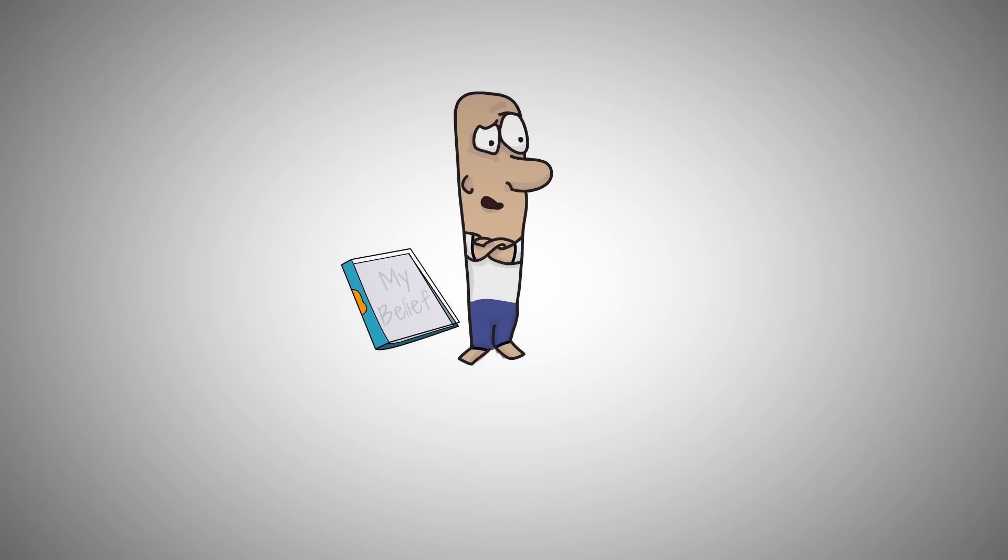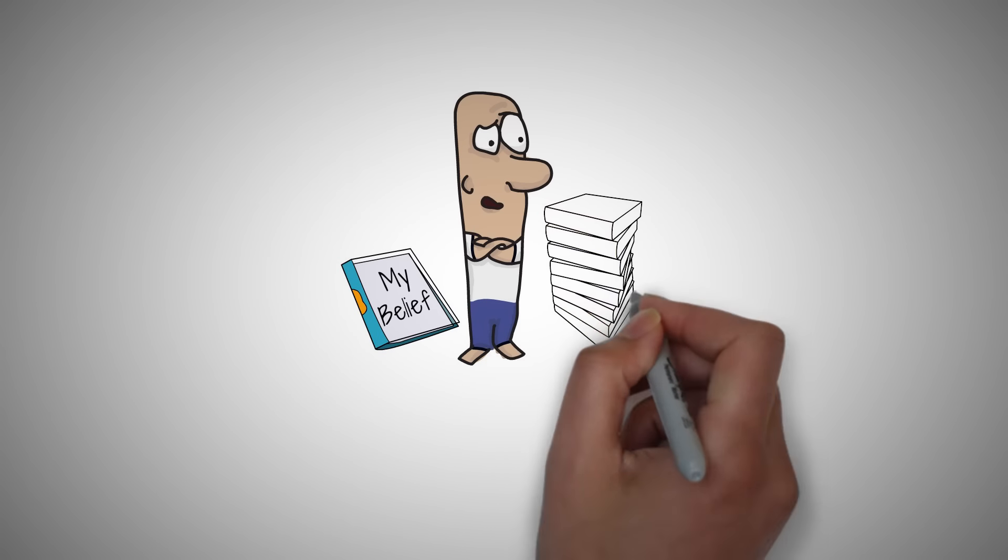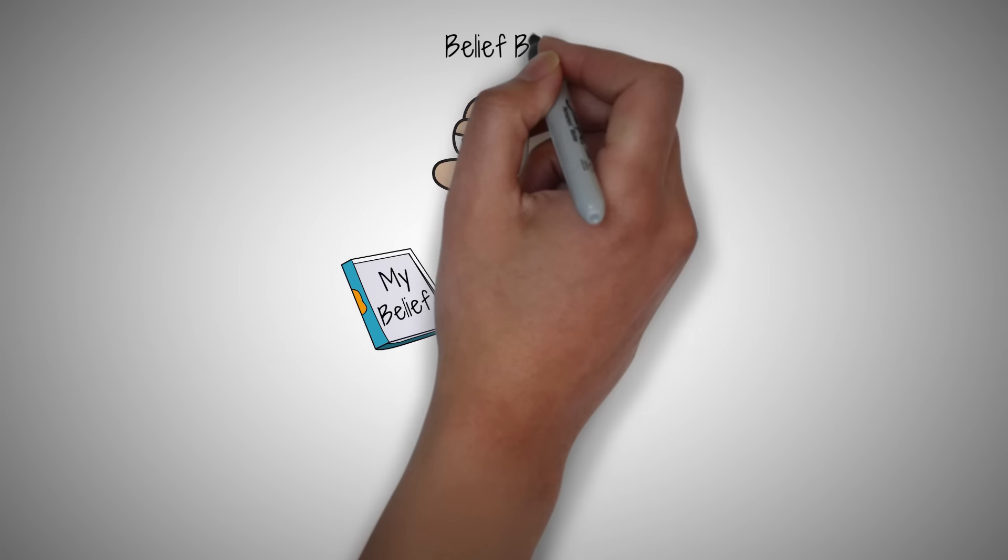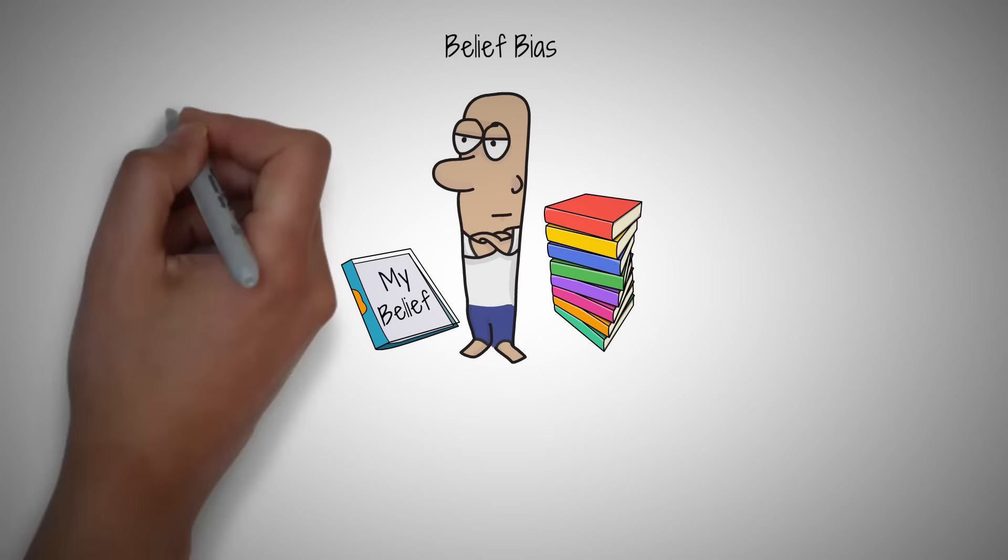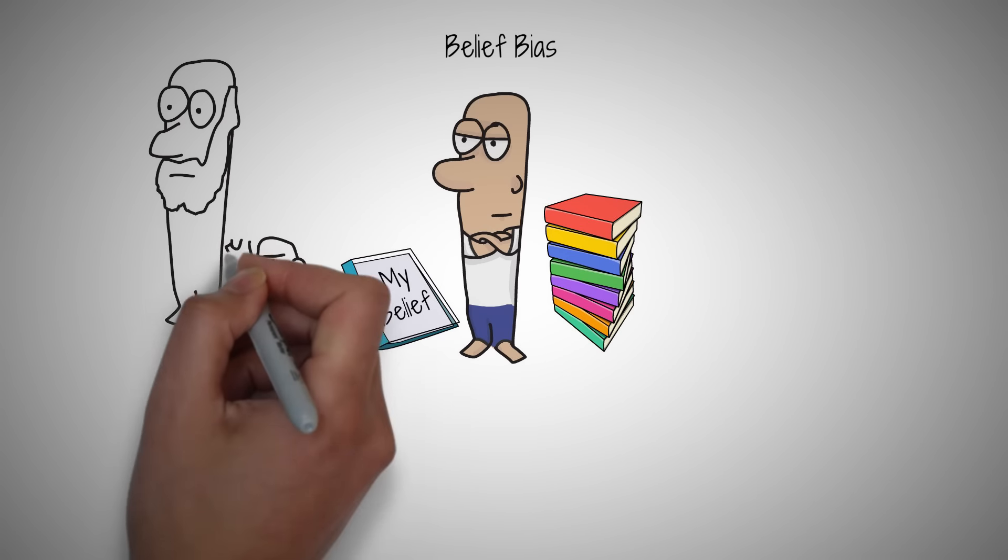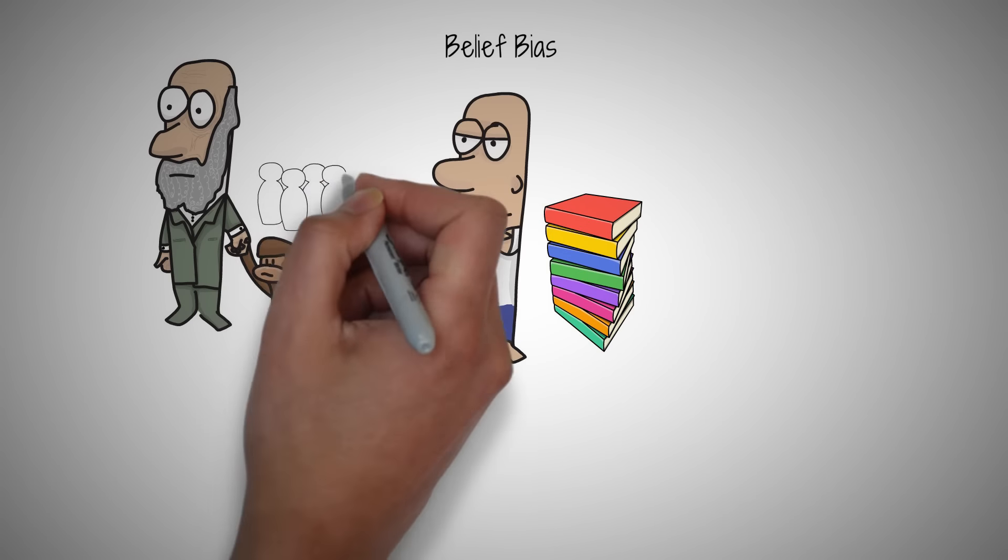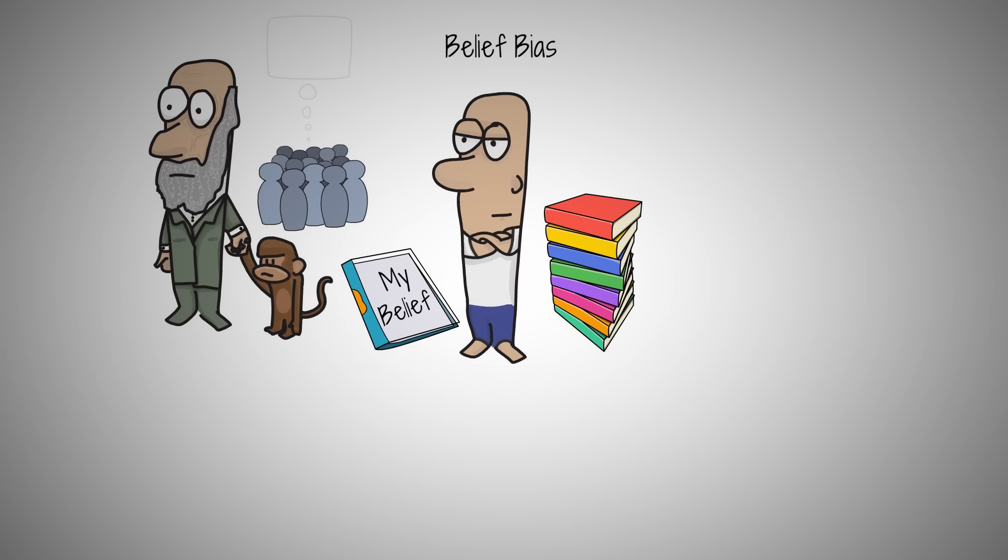Have you ever clung to a belief even when evidence suggested you might be wrong? This stubbornness is often a result of belief bias, a hidden force shaping our judgments and decisions. Charles Darwin introduced his theory of evolution in the 19th century. Despite overwhelming evidence, society largely dismissed his ideas because they conflicted with established beliefs.